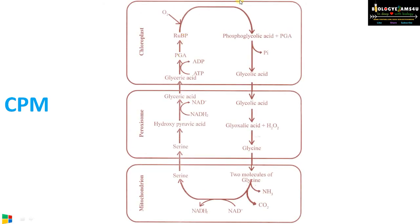In the detailed pathway, RuBP combines with oxygen in the presence of Rubisco forming 2-phosphoglycolate — that is why the cycle is also called the C2 cycle — along with phosphoglyceric acid, which enters the Calvin cycle. The 2-phosphoglycolate is converted to glycolic acid, then transported to the peroxisome where it becomes glyoxylic acid and combines with hydrogen peroxide to form glycine. Glycine is then transported to the mitochondrion, where two molecules of glycine combine to form serine with the release of carbon dioxide and ammonia. Ammonia is toxic to the plant and must be neutralized.